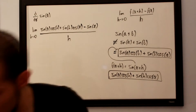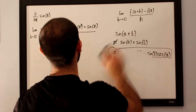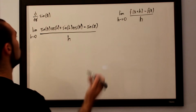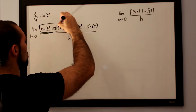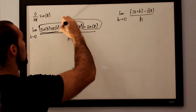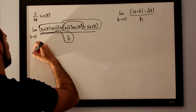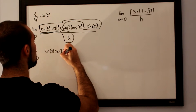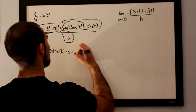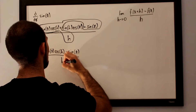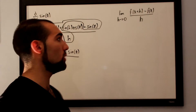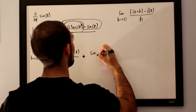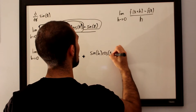What I want to do to make things easier is split this up into two different fractions. I want to join the terms containing sine of x — that is, sine of x cosine of h minus sine of x — over h. The leftover term simply becomes sine of h cosine of x over h.